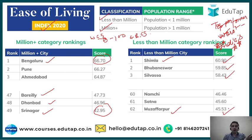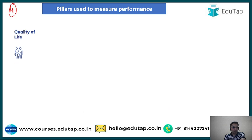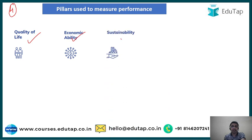These rankings are based on parameters — specifically four pillars used to measure performance under the Ease of Living Index. The first pillar is Quality of Life, the second is Economic Ability, the third is Sustainability, and the fourth is the Citizen Perception Survey. The Citizen Perception Survey is a new pillar included specifically in the Ease of Living Index 2020.